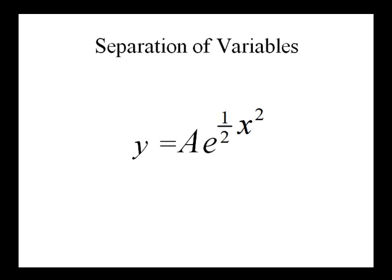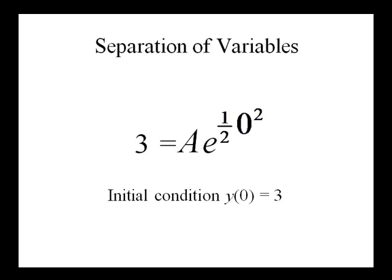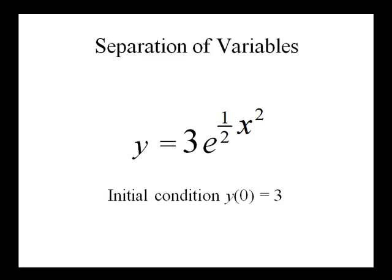In order to solve for a, we need an initial condition. Let's say we have y of 0 equals 3, meaning x equals 0 when y equals 3. Substituting in, we get e to the one-half times 0 squared, which is e to the 0, or 1. So a equals 3, and our unique solution with this initial condition is y equals 3e to the one-half x squared.